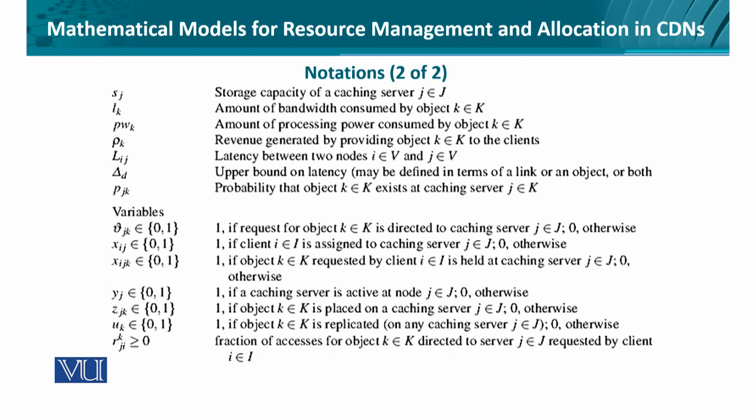We also look at the capacity of a certain caching server — one of the variables that we can define. The bandwidth consumed by an object, the processing power consumed, and eventually the revenue generated by servicing or provisioning the content to the requesting client. Then the latency in terms of round trip time or delay. We also have variables which are more Boolean in nature — for instance, if a certain request is entertained, or if a request is redirected to the caching server when the origin server is not available.